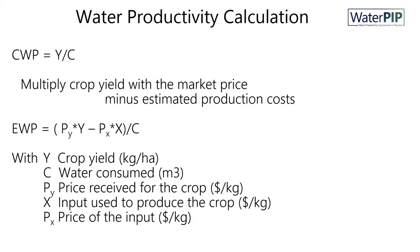The biophysical crop water productivity can be calculated by defining crop yield by water consumed. To calculate the economic water productivity, the residual value can be used. We multiply crop yield with the farm gate price — the market price for the crops received — minus the cost of the other inputs. What is left, the residual, can be seen as the value of water.